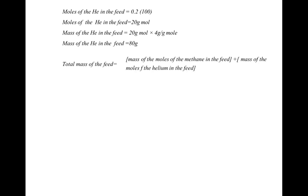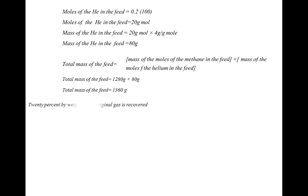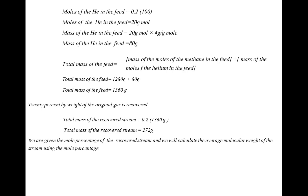So the total mass of feed is the sum of methane mass and helium mass: 1280 + 80 = 1360 kg. Now, 20% by weight of the feed is recovered, so the recovered stream mass = 0.20 × 1360 = 272 kg.